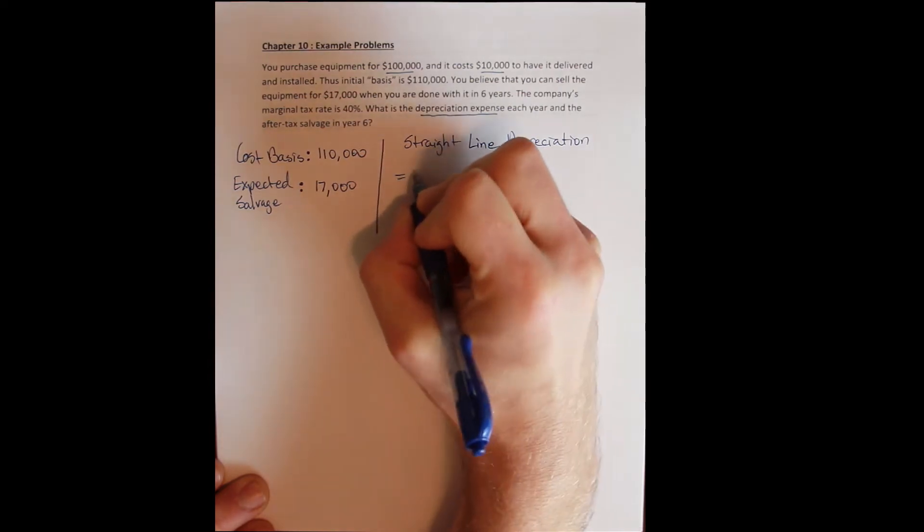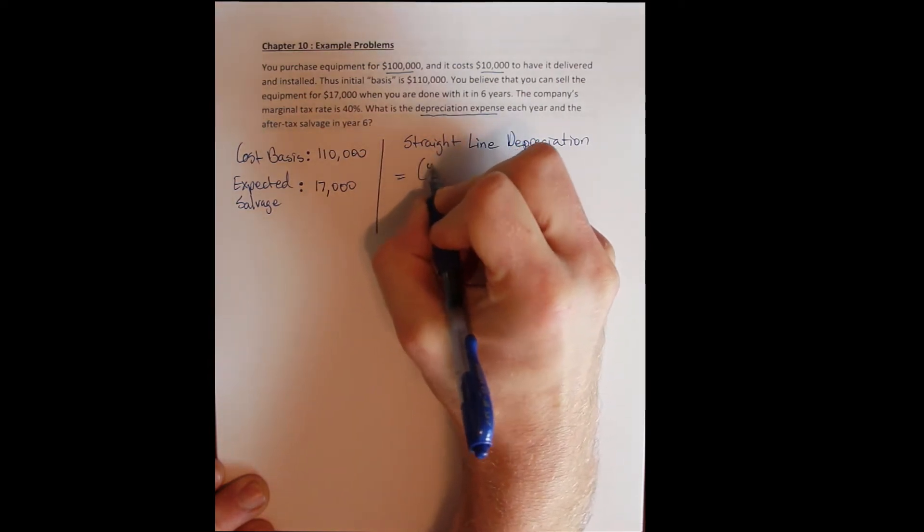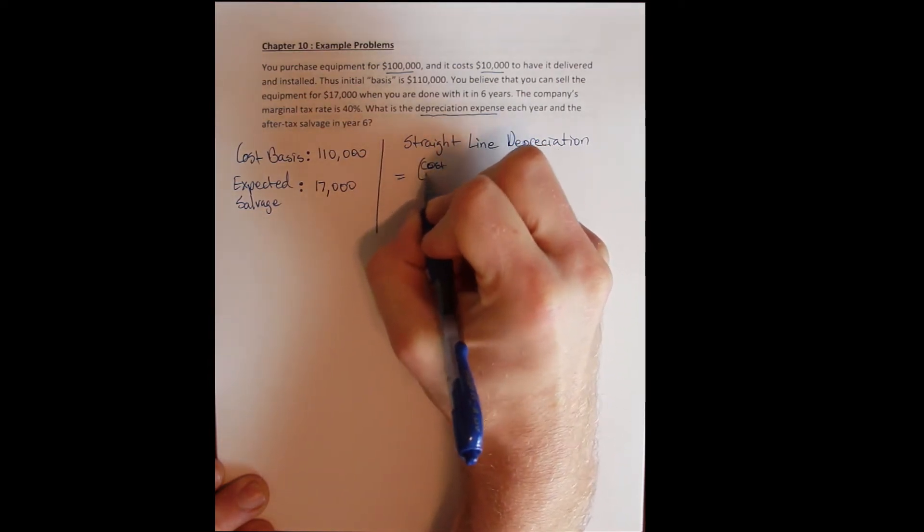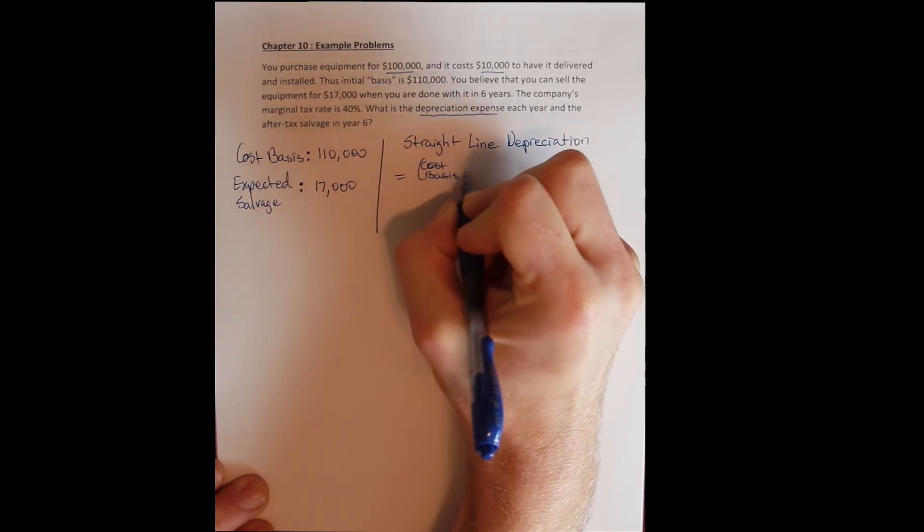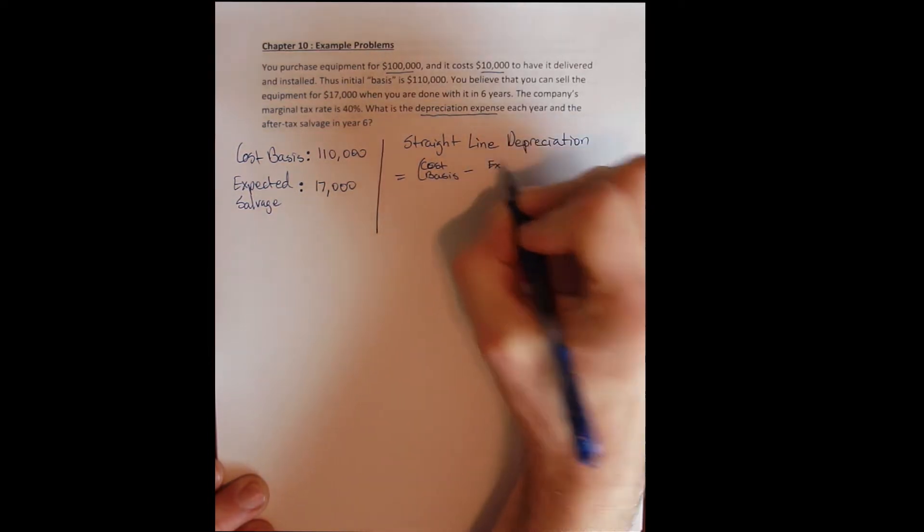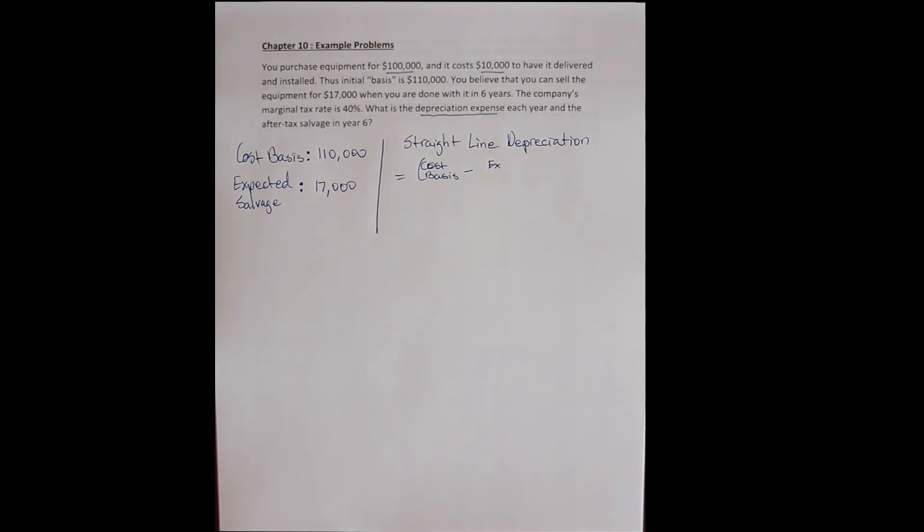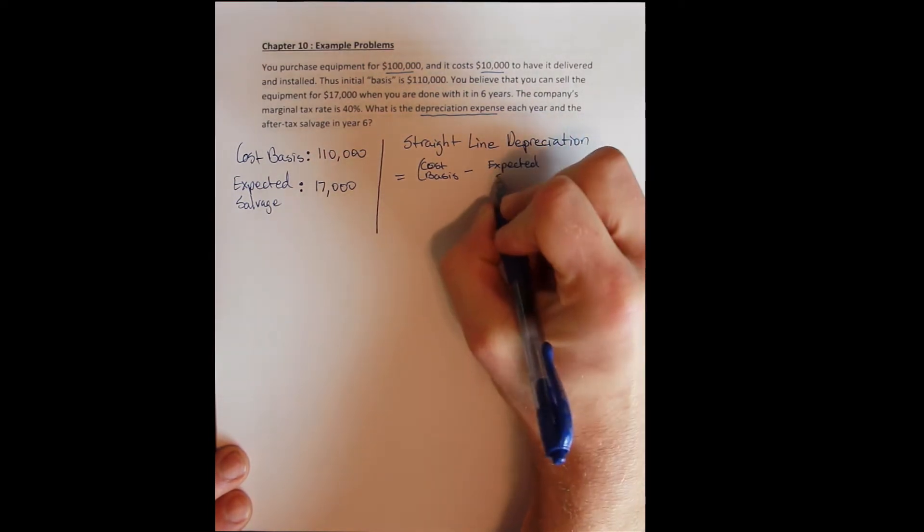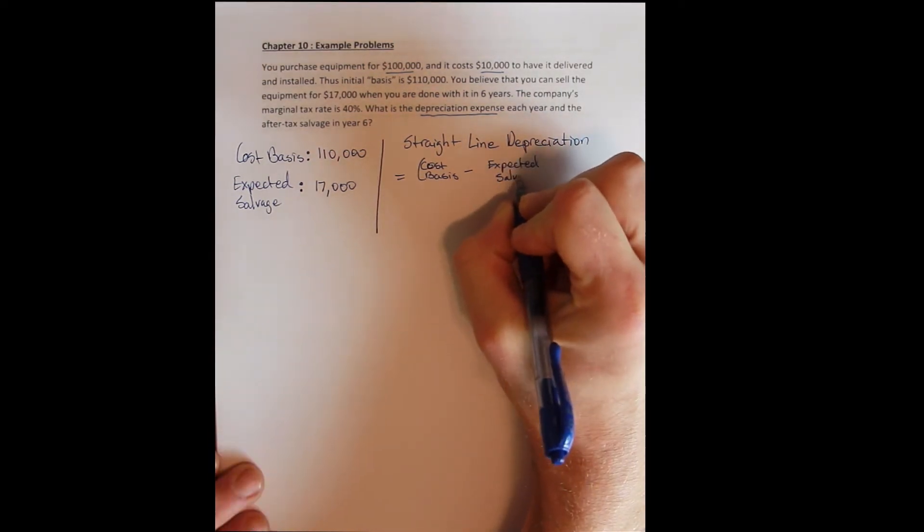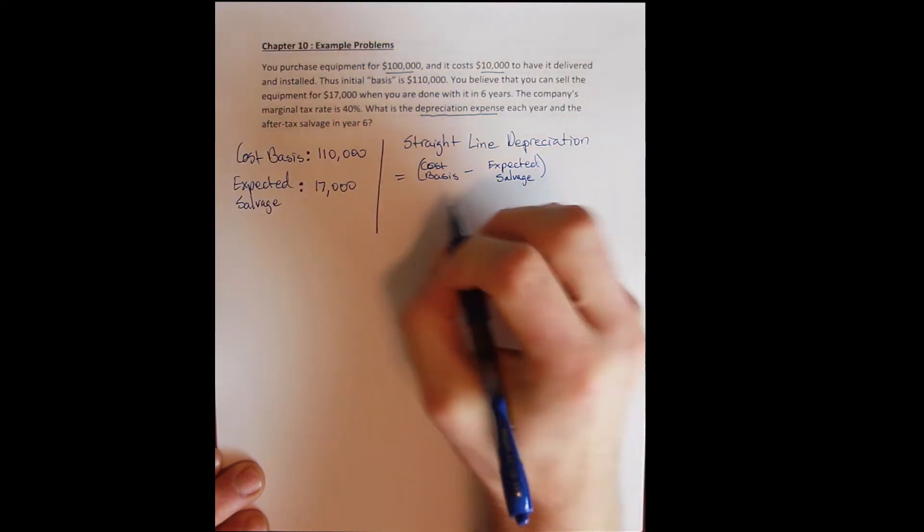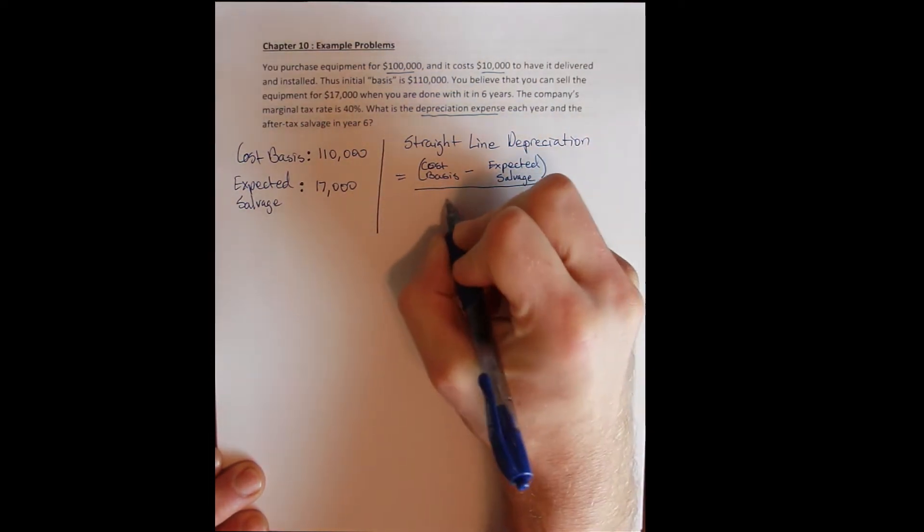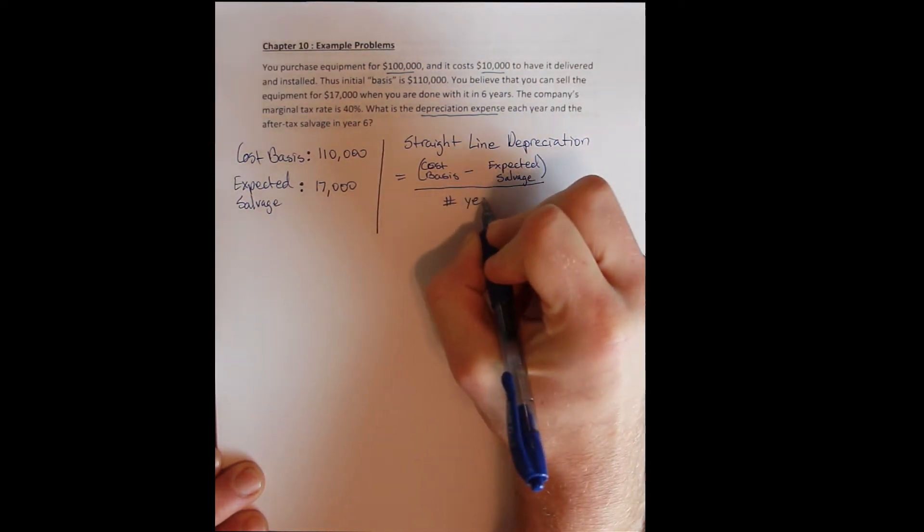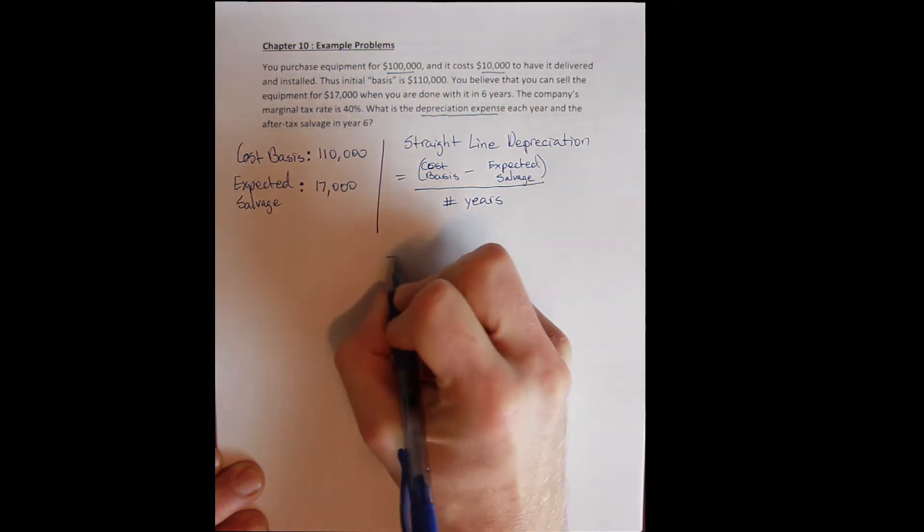Where straight line depreciation in every year is equal to the cost basis of the asset minus the expected salvage value divided by the number of years that we expect to use the asset. And now we can plug that in.